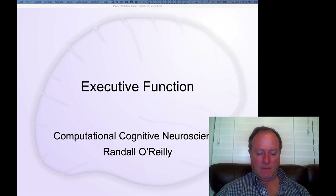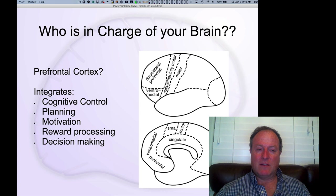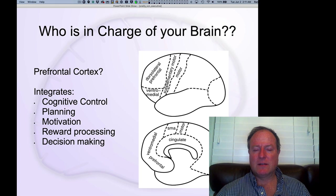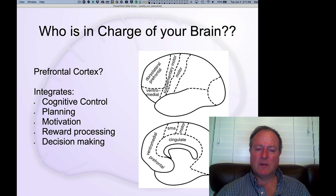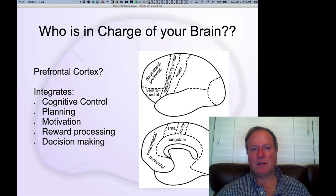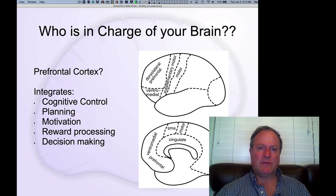We're at the last chapter: Executive Function. The notion of an executive raises the question of who's in charge of your brain. The answer from cognitive neuroscience is essentially the prefrontal cortex. We'll see that this is an overly simplistic answer, but it does have a lot of underlying truth value. The prefrontal cortex has been associated with cognitive control, planning, motivation, reward processing, and decision making — things we've talked about previously. In this chapter, we'll try to understand where these come from and break down the concept of what an executive is and how we understand these different functions as arising from underlying neural tissue.